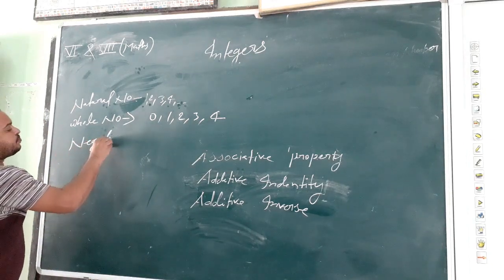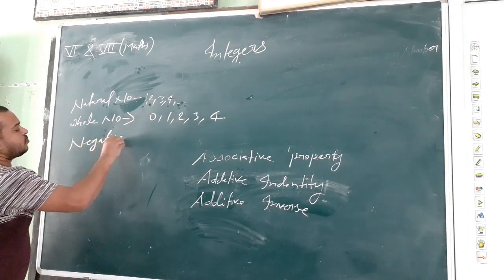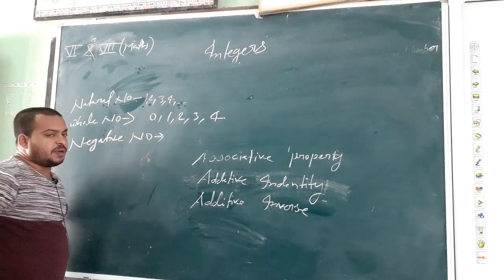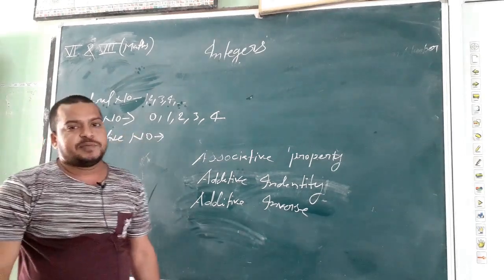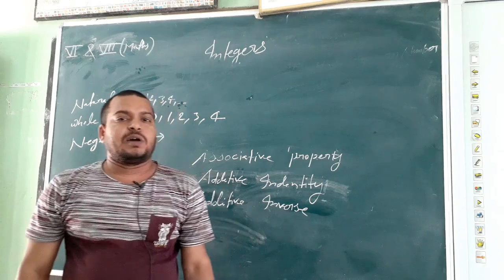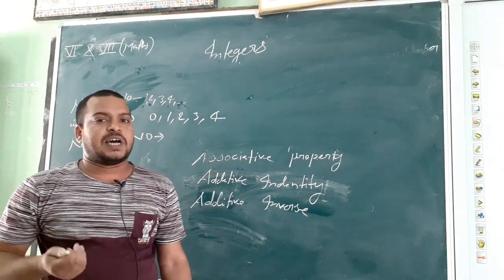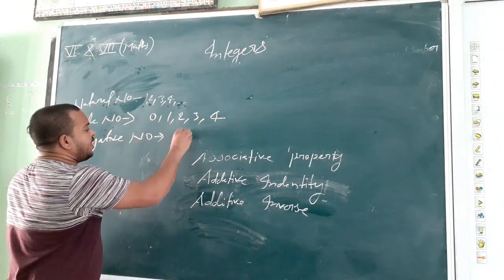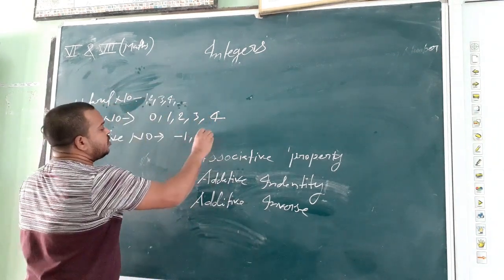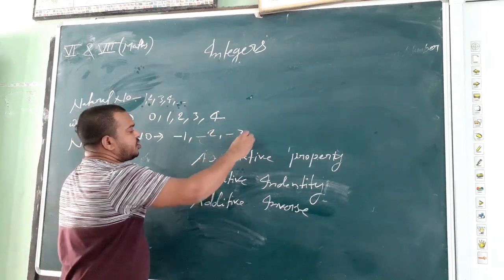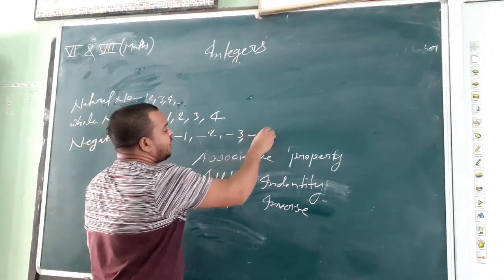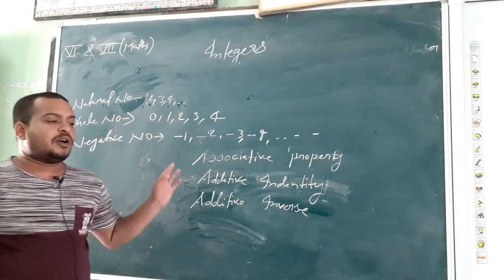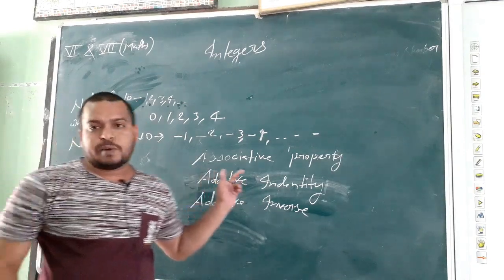What is a negative number? All the natural numbers with a negative sign are known as negative numbers, like minus 1, minus 2, minus 3, minus 4 and so on. These are known as negative numbers.